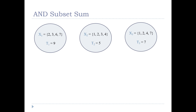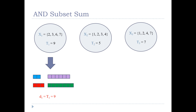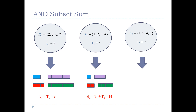Here is an example with three instances of partition. We essentially do the same thing as before: for the first instance, jobs are encoded with due date T1. For the second instance, jobs have due date T1 + T2 — the sum of the first two targets. Continuing this pattern, jobs for the third instance have due dates T1 + T2 + T3, which is 21 in this example.